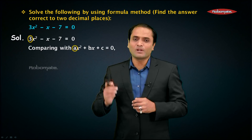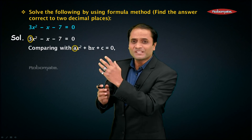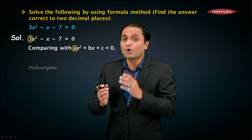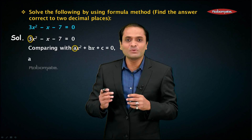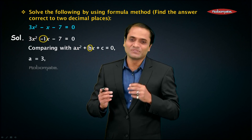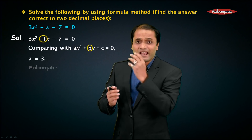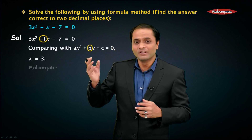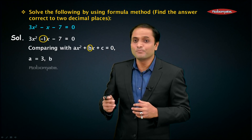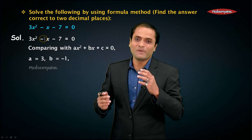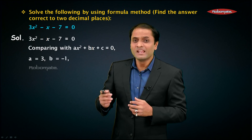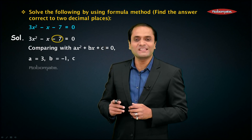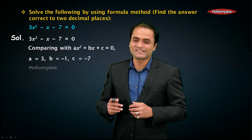If you compare the coefficient of x², you get a = 3. Next, if you compare the coefficient of the x term, b = -1. Next, if you compare the constant terms, c = -7.